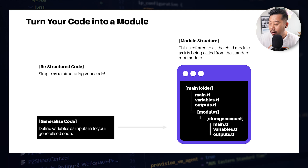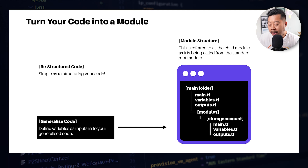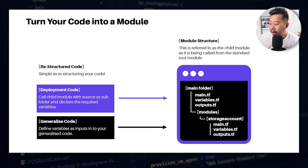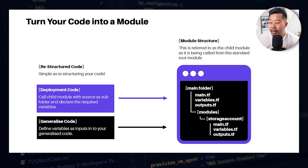So that storage account code — we would generalize it. We'd take out any static values and convert them into variables. Then we have the deployment code, which will call the child modules and add the inputs you want to configure and deploy.